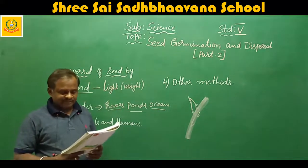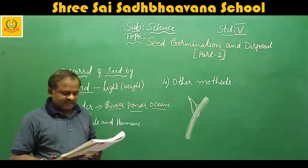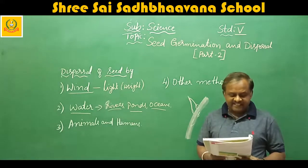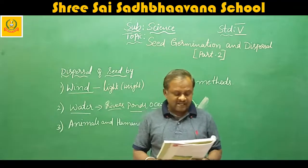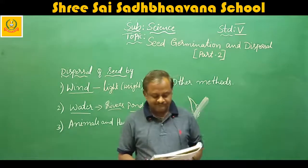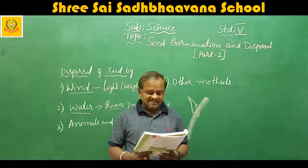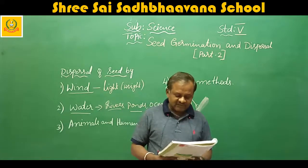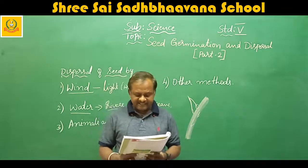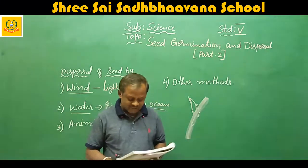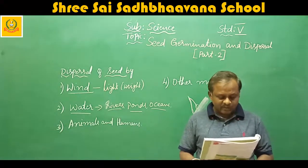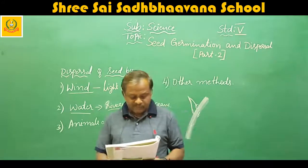Dispersal of seed by animals and humans. Animals and humans eat fruits and throw away their seeds. Seeds of apple, mango, orange, etc. are dispersed in this way. Some seeds have hooks that stick to the fur of animals or to the clothing of humans and get dispersed — one such example is the cocklebur seed. Birds swallow some seeds which come out with their droppings. Squirrels collect nuts and bury them for winter; sometimes they forget where they buried the seeds, so those seeds grow into new plants when conditions become favorable. Some seeds get stuck on the beaks of birds; when birds rub their beaks against the bark of trees, the seeds fall down and grow into new plants.